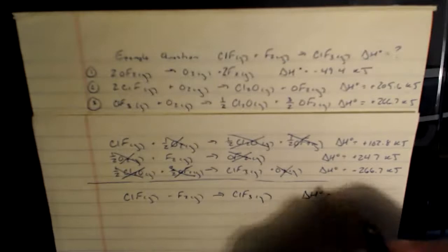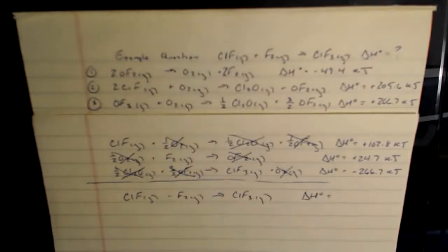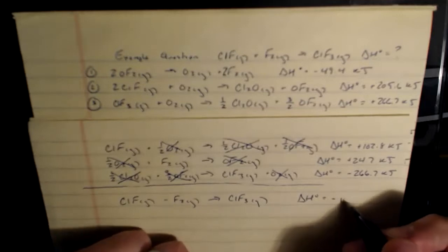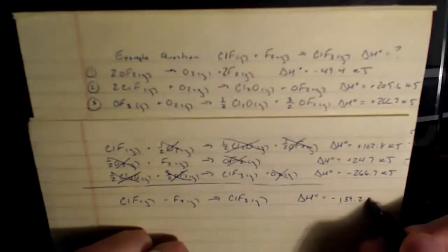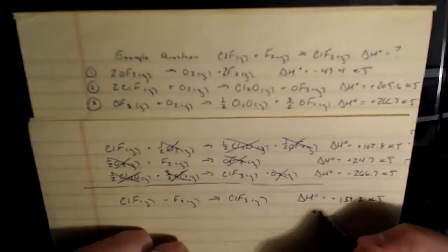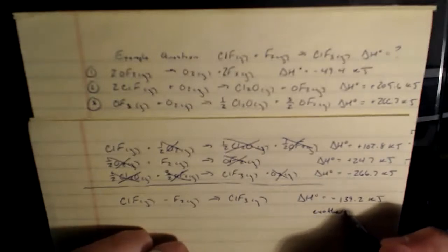So to solve for the enthalpy value in this case, we just have to take the three values that we rewrote. Because we had to account for the changes. So using those new values, we have positive 102.8 plus 24.7 plus a negative 266.7 makes my final enthalpy value negative 139.2 kilojoules. And that negative enthalpy value means that this is an exothermic reaction.